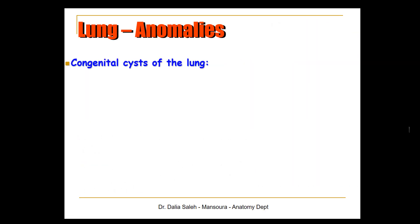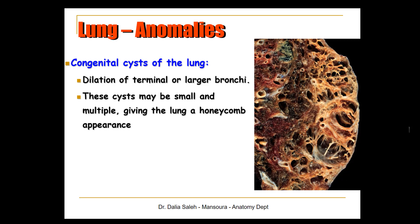Another anomaly is congenital cysts of the lung, where there is dilatation of terminal or larger bronchi. These cysts may be small or multiple, giving the lung a honeycomb appearance. The cysts drain poorly, causing stagnation of secretions and superadded infection, so the baby or child often suffers from chronic chest infection.